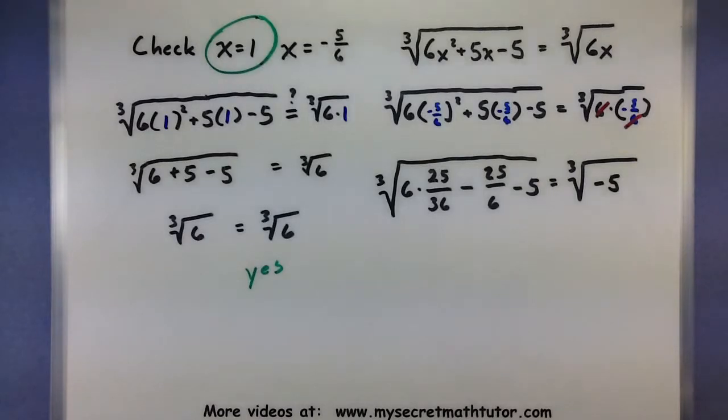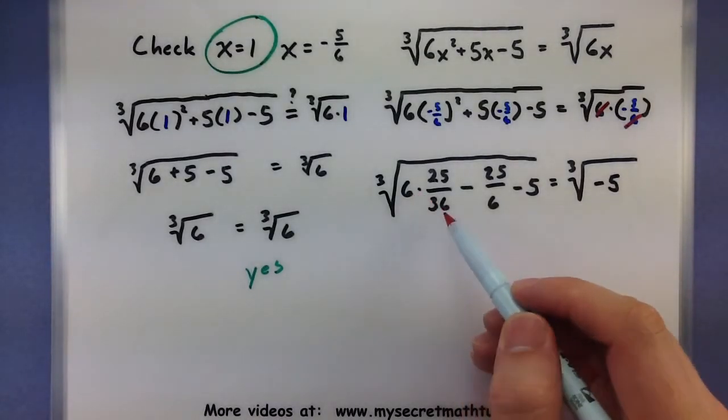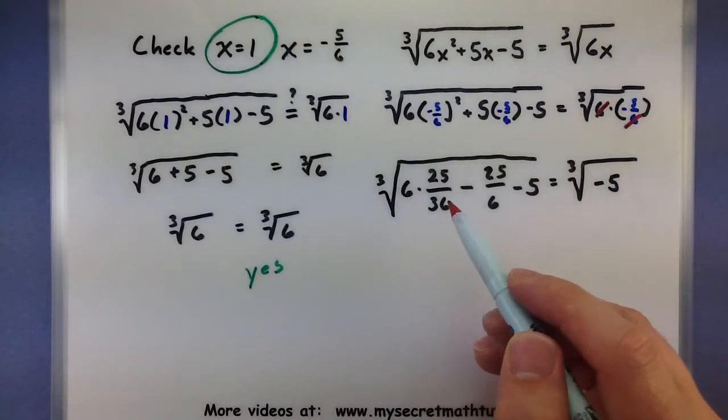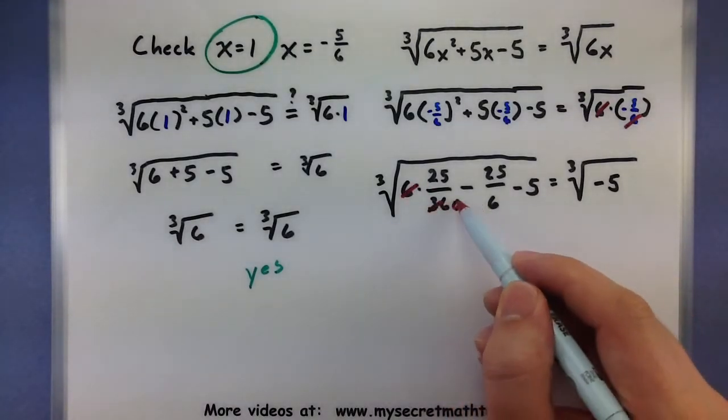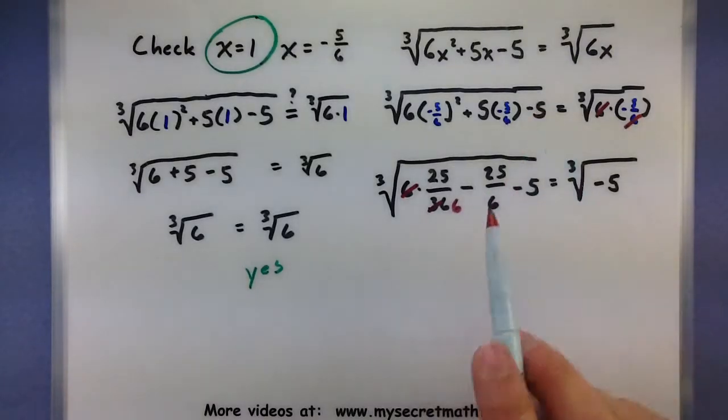Okay, now there's a little bit more simplifying we can also do on the left. Notice how this 6 will cancel with a 6 in the 36. So 6, cancel one 6 away.